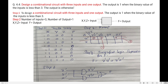The first step in designing a combinational logic circuit is to write the problem statement: design a combinational circuit with three inputs and one output where the output is 1 when the binary value of the input is less than 3. Step 2 is to identify the number of inputs and outputs. We have 3 inputs and 1 output. I have assigned variable names X, Y, Z for inputs and F for output.